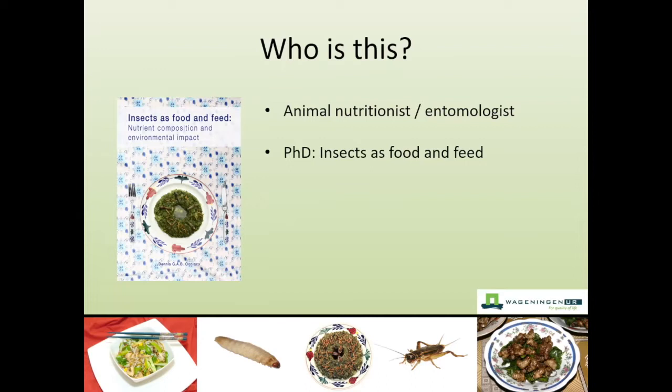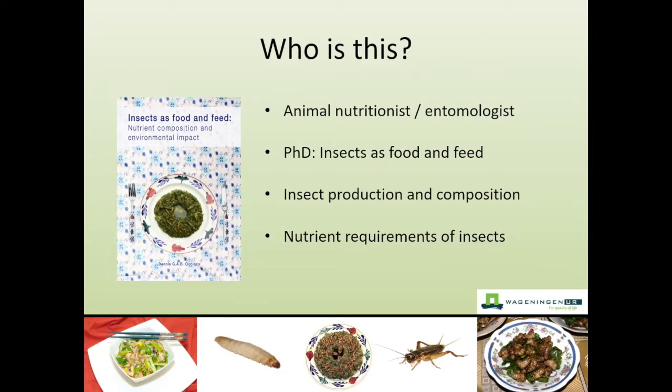At the time of my PhD, the topic was quite broad with not many subtopics, so I looked at nutrient composition and the environmental impact of insect production systems. I continued researching how to produce insects and their composition, and more recently I've been working on the nutrient requirements of insects. Today I'll focus primarily on what is in these insects — regardless of whether they're for human, lizard, or amphibian consumption.